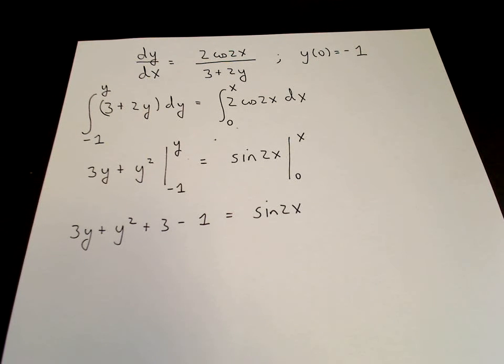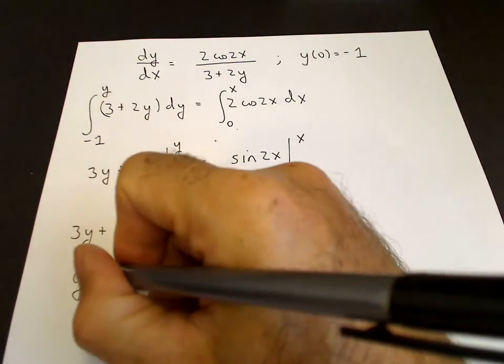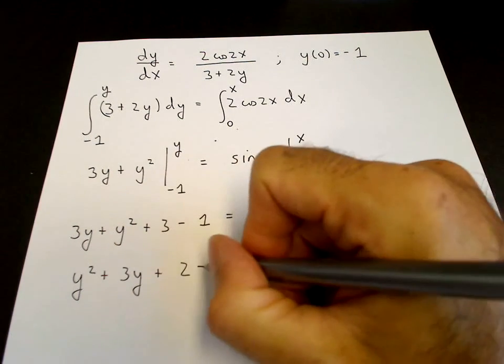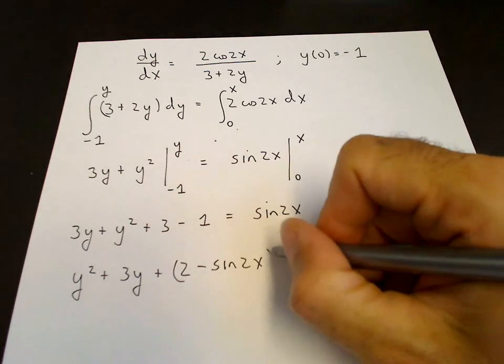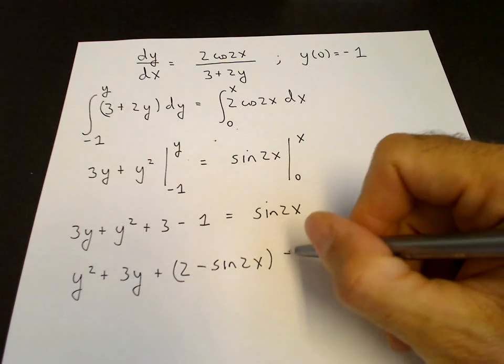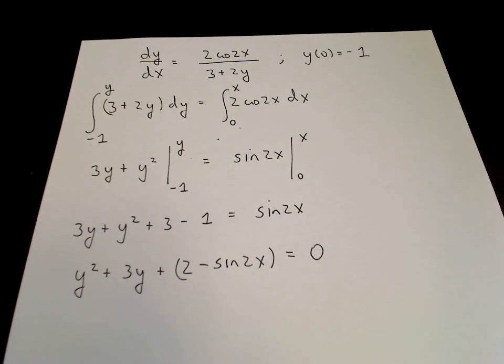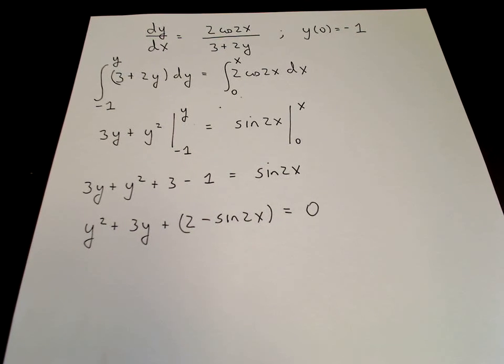We recognize this equation as a quadratic equation for y, where the constant term is a function of x. So we write that as a quadratic equation. y squared plus 3y plus 2 minus sin2x. That's the constant term. Constant with respect to y equals 0.